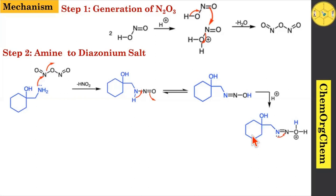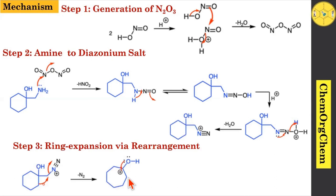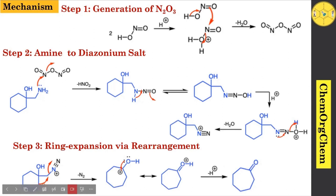Now you see this nitrogen lone pair of electrons goes here, then followed by kick-off of this water molecule, which leads to generate the corresponding diazonium ion. This diazonium ion is highly unstable, therefore the next step undergoes ring expansion by rearrangement reaction. The nitrogen gas quickly falls off at the same time as this carbon-carbon bond migrates to this center, generating the corresponding ring-expanded ketone as a product.